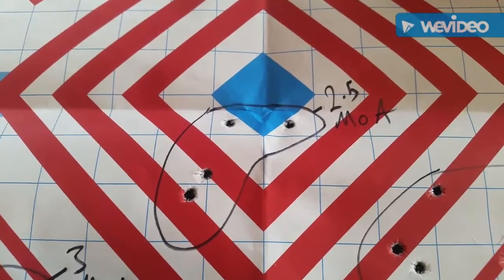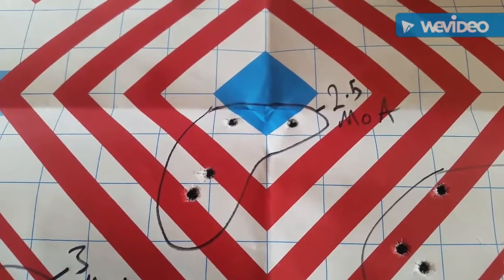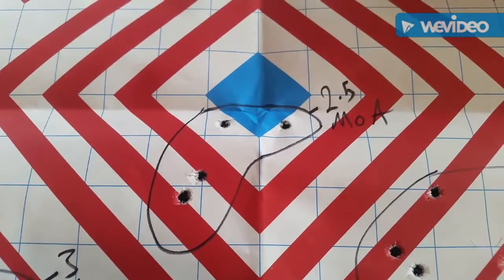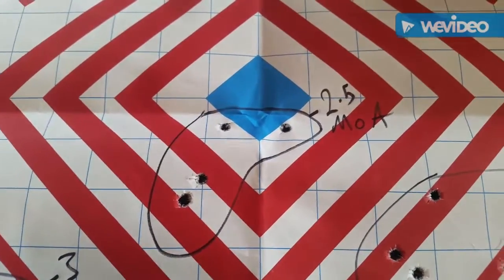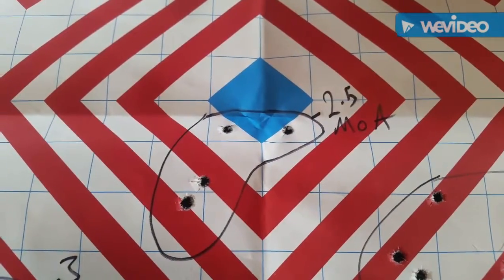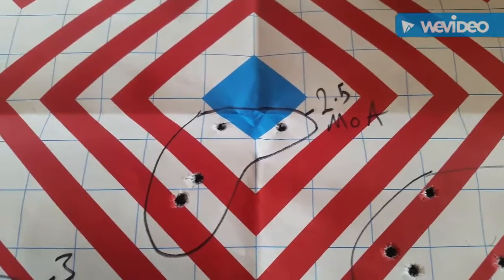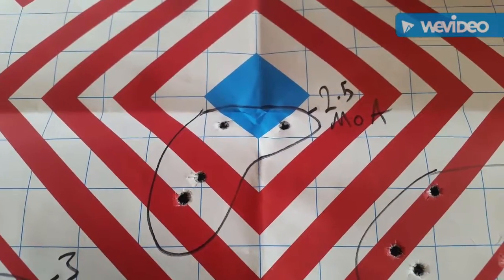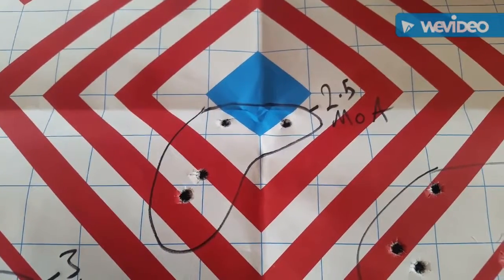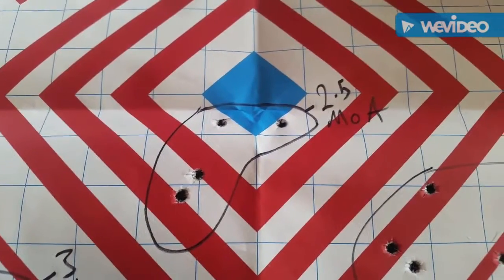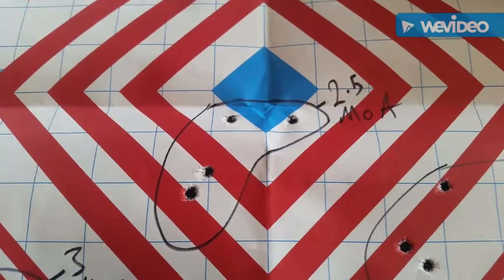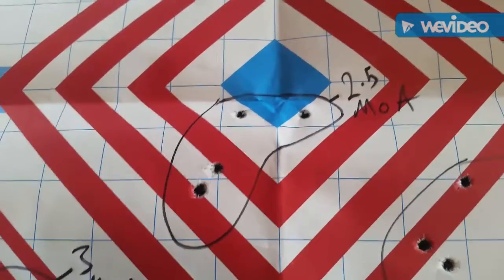I don't like to shoot three or four round groups, I like to shoot five round groups. But when I've got a 20 round box of ammo and I'm trying to shoot four groups, sometimes you just lose a round. I would love to go back to the store and buy two or three more boxes so I can get a much better average, but unfortunately that's just not the case. This one: two and a half MOA group.